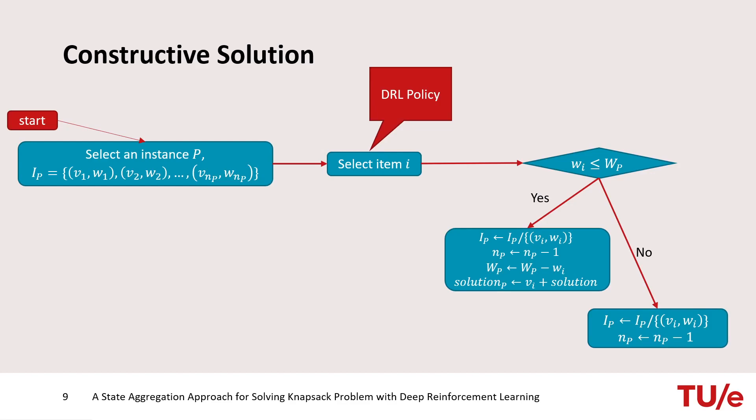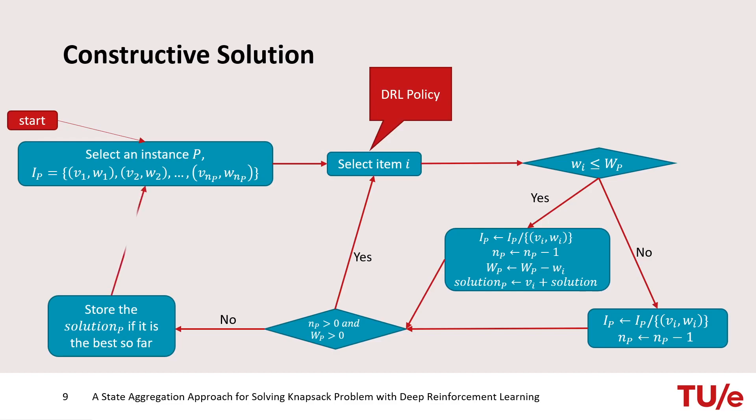After either case, the items and the capacity are checked. If there are more items to be considered, the same process is performed for the next item. Otherwise, the solution is stored if it's better than the previous best solution, and the next instance is chosen for solving.